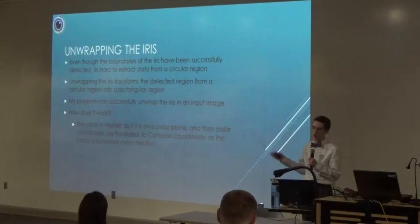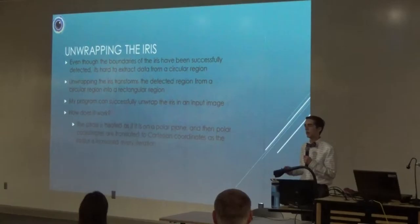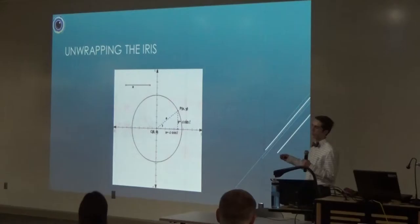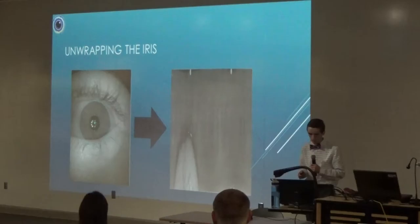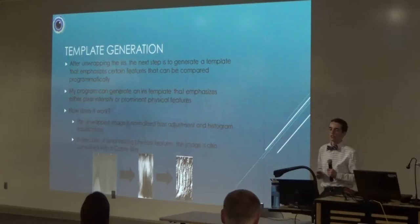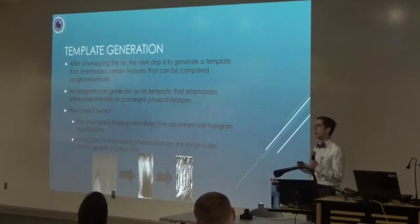Now I'll talk about unwrapping the iris. This isn't an essential component but it's very helpful, because it's hard to deal with data in a circular plane. What this does is take the iris and uses simple trig - a polar to Cartesian conversion - to unwrap that circle into a rectangular plane, so the data is much easier to access and manipulate. The x value is r cosine theta, the y value is r sine theta. I go out one radius at a time around the circle, building line segments, until I have the entire iris unwrapped. I then cut off the bottom portion which contains a little bit of under-eye skin caught in the image.